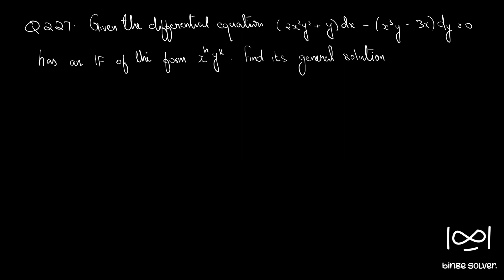Question number 227. Given the differential equation (2x²y² + y)dx − (x³y − 3x)dy = 0, which has an integrating factor of the form x^h · y^k. Find its general solution.